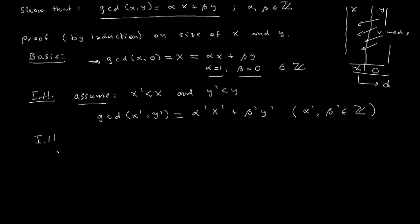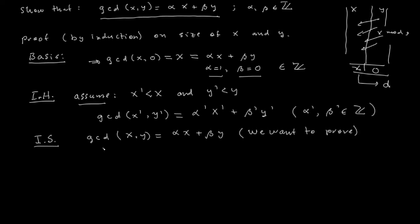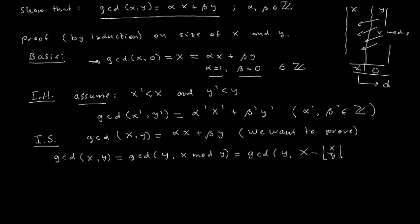In the inductive step, we want to show GCD(x, y) equals alpha*x plus beta*y. By Euclid's formula, GCD(x, y) equals GCD(y, x mod y), which equals GCD(y, x minus floor(x/y)*y). Importantly, y is less than x, and x mod y is less than y.